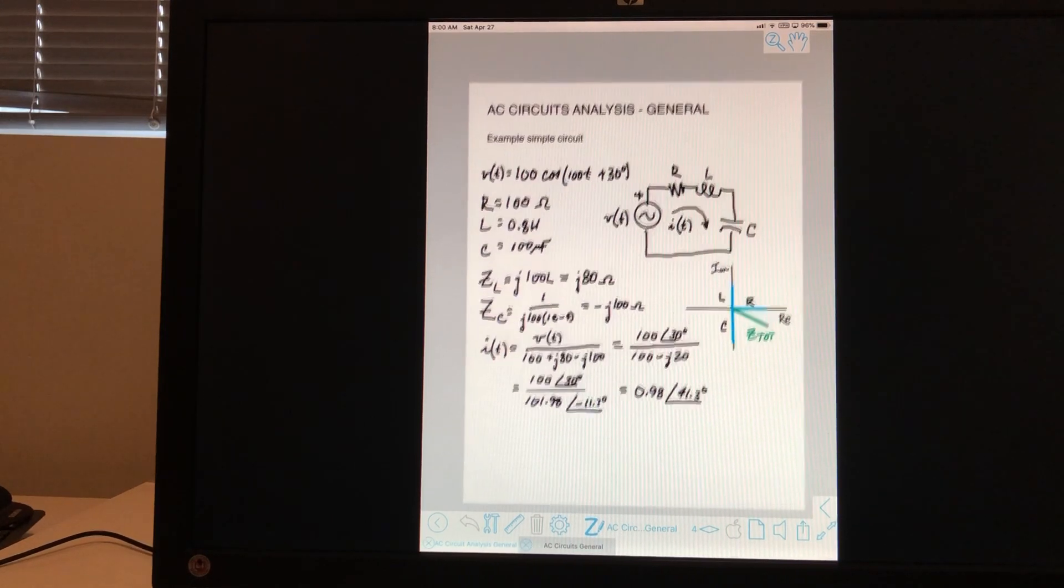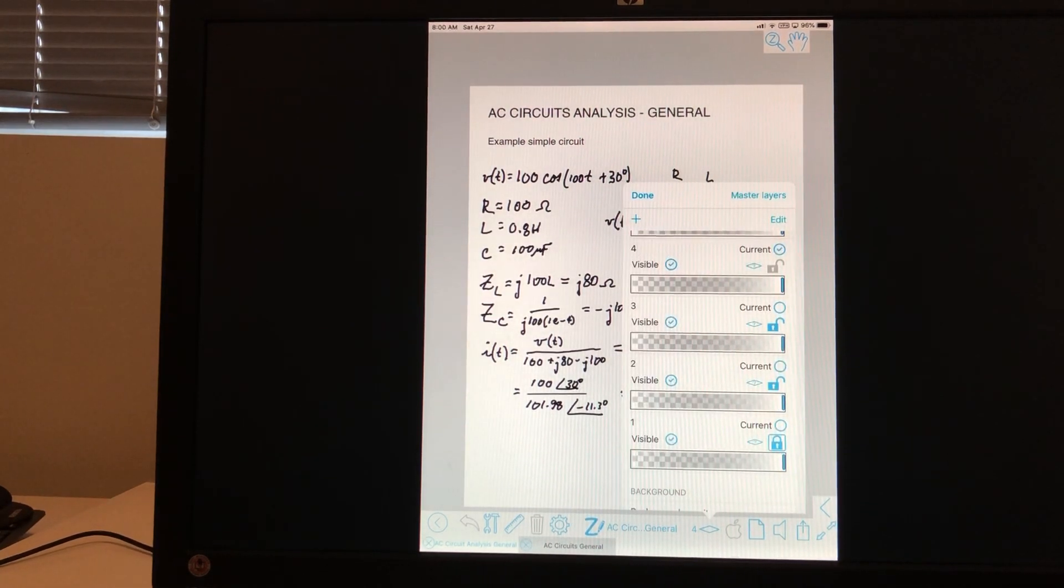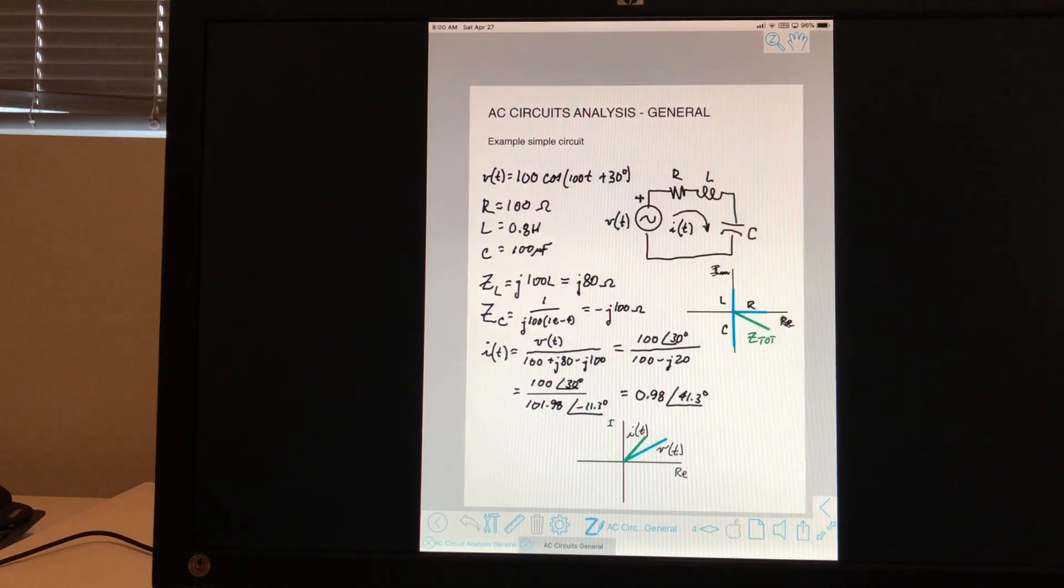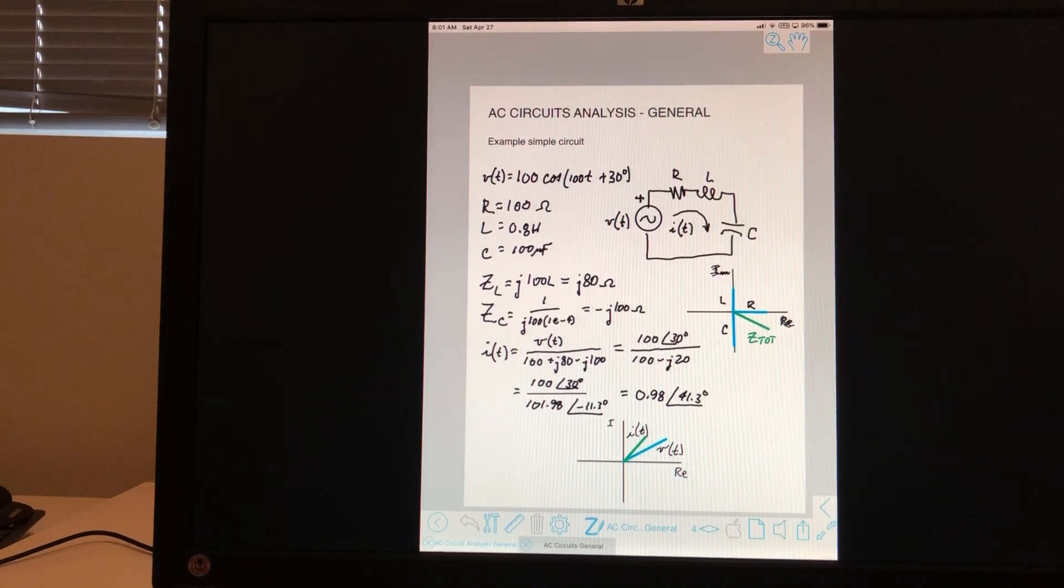And the total impedance is the resultant of those three input vectors. And we can also then plot the voltages and the currents here. And so that's what I've done here.